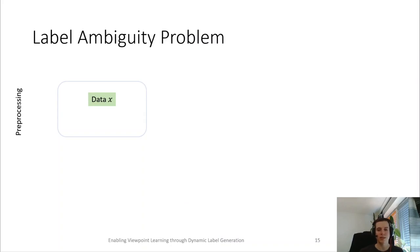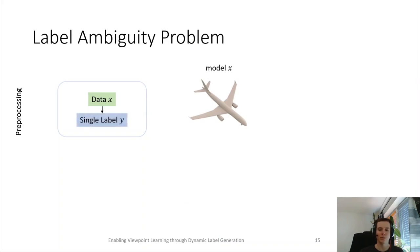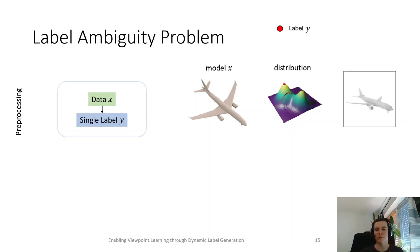For any data point X, which in our case corresponds to an input 3D model, for example this airplane, we have to select a label Y which we use during training. In our case, that means we consider the view quality distribution and choose a view with the highest viewpoint quality, which could for example be this view from the left side of the model.